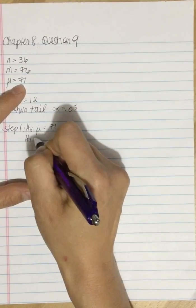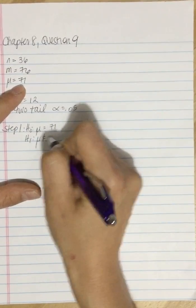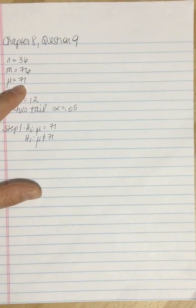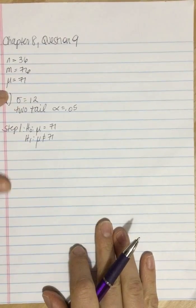Our alternate is that it's not equal to 71. So that's a non-directional or two-tailed hypothesis.